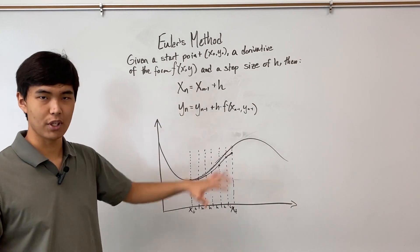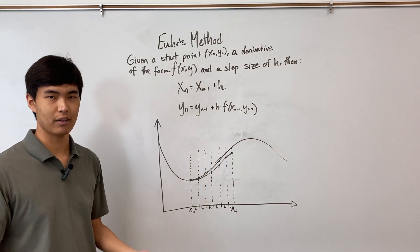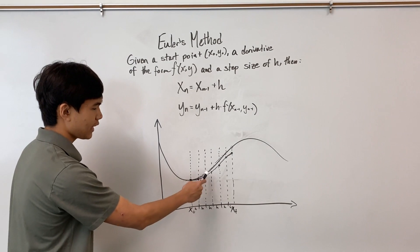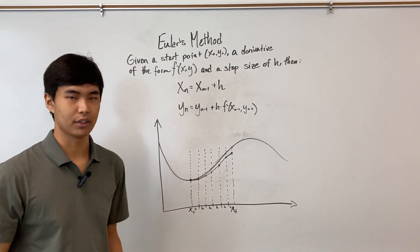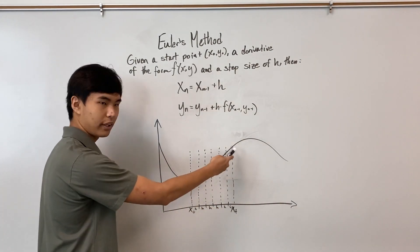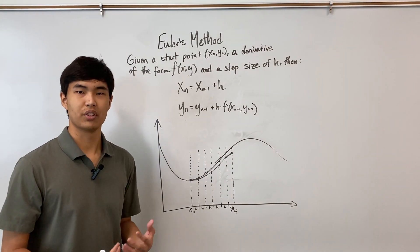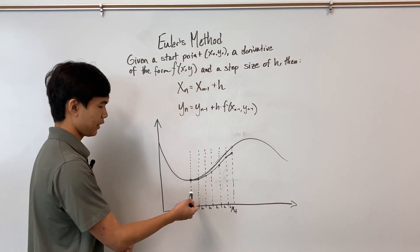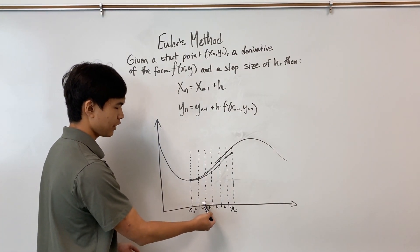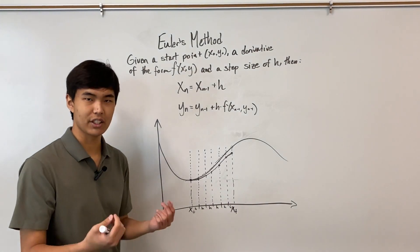And since this is an approximation, there's of course going to be some error in it. So as we take each step, the error compounds, which leads to this final error. Now one way to reduce the error is by increasing the number of steps or decreasing h.